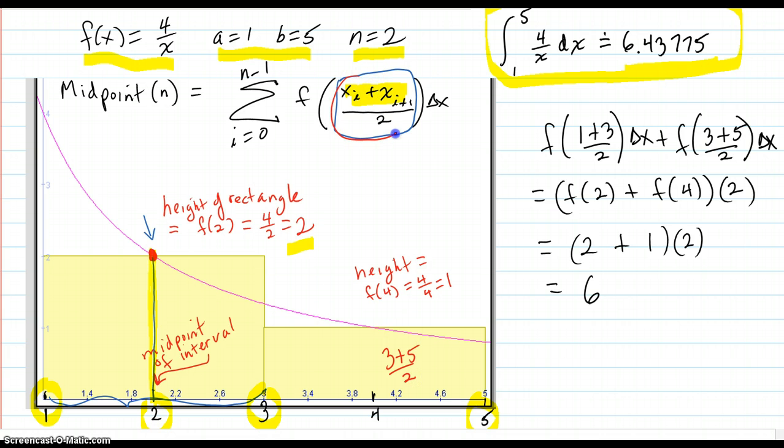That's your midpoint of this sub-interval. The average of your x boundaries for that sub-interval. 3 plus 5 divided by 2 would be 4.